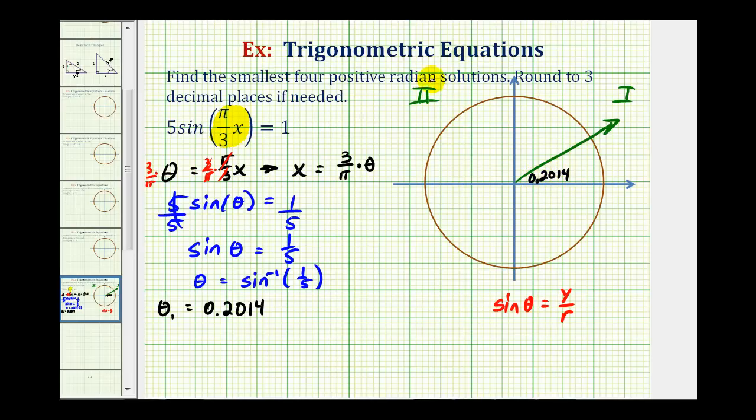Well, because sine is also positive in the second quadrant, if we sketch a reference angle of 0.2014 in the second quadrant, we can also determine a second solution. So again, if this reference angle is 0.2014, this angle that terminates in the second quadrant would also have the same sine function value.